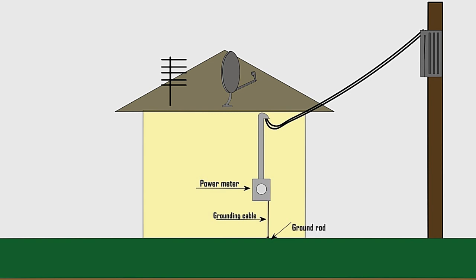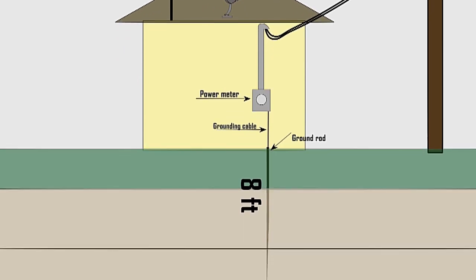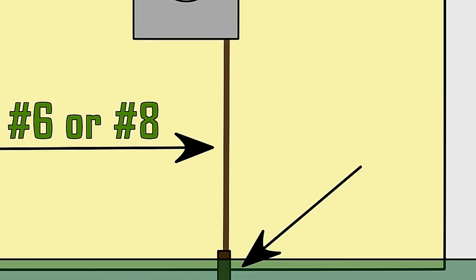Now for the do-it-yourselfers, the grounding rod needs to be 8 feet in the ground. The grounding cable needs to be between number 6 and number 8 gauge ground wire.